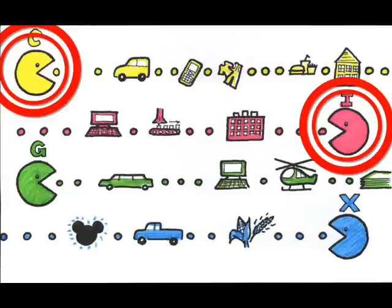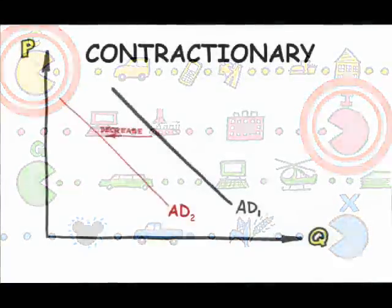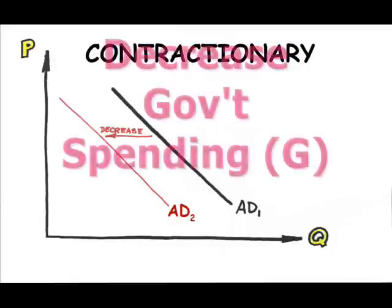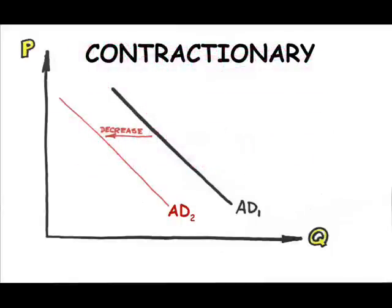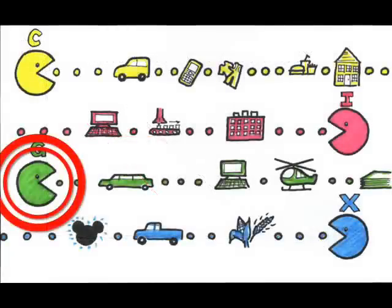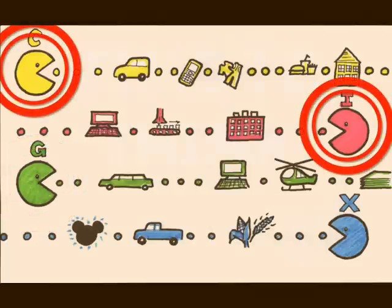Contractionary fiscal policy is typically represented by some type of drag on the aggregate demand, either decreasing government spending or increasing taxes. Again, a change in government spending will have a direct effect on aggregate demand, whereas a change in taxes will indirectly affect aggregate demand by way of households and businesses. Time to think.